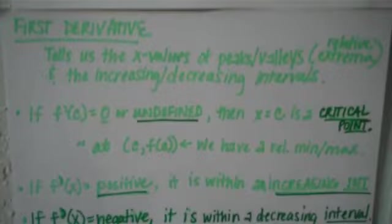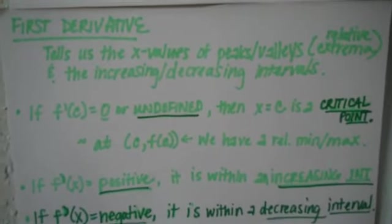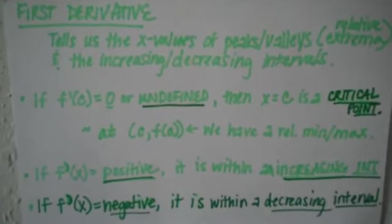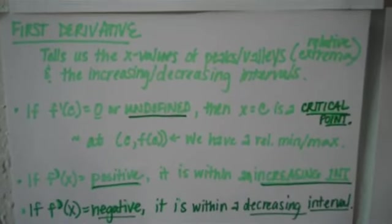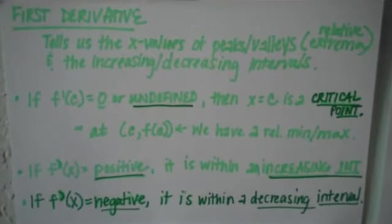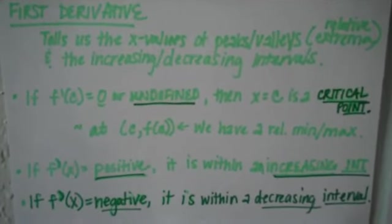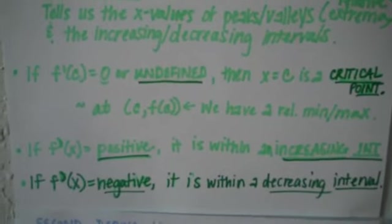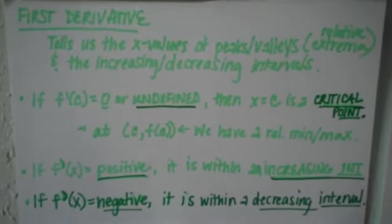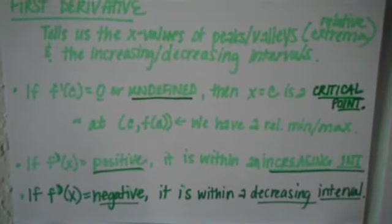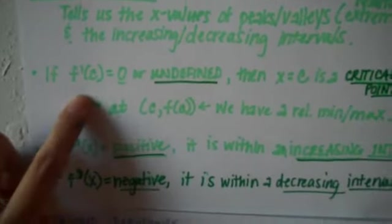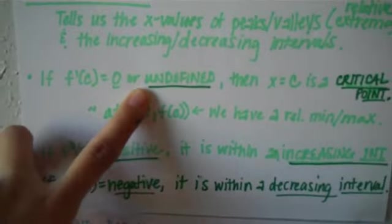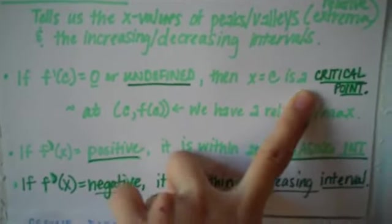Now going into our new stuff. The first derivative is something we took a huge look at in terms of what it tells us about our function in this chapter. The first derivative tells us where we have the relative extrema — the peaks and the valleys — and also where we have increasing and decreasing intervals. When the first derivative is equal to 0 or undefined, that's when we have a critical point. For example, if f prime of 2 equals 0 or undefined, then at x equals 2 we have a critical point.